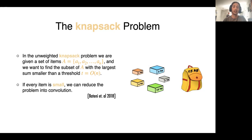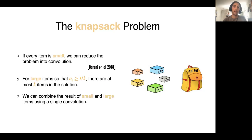We can use an algorithm of Bringmann and Fischer to reduce the problem when every item is small into the convolution. And as we mentioned before, we can solve convolution in constant rounds of MPC. For the large items, which are the items with size at least T/K, we know that there are at most K of these items in a solution. So if we can solve the problem separately for these large items, then we can merge the result of small items and large items together using a single convolution.